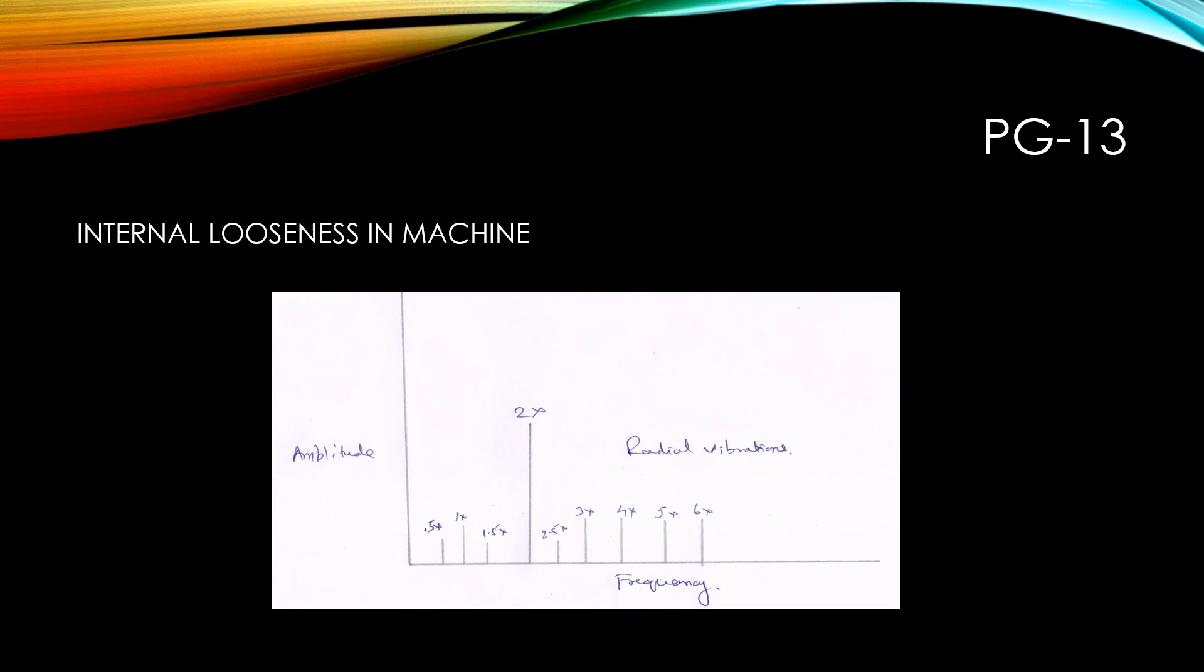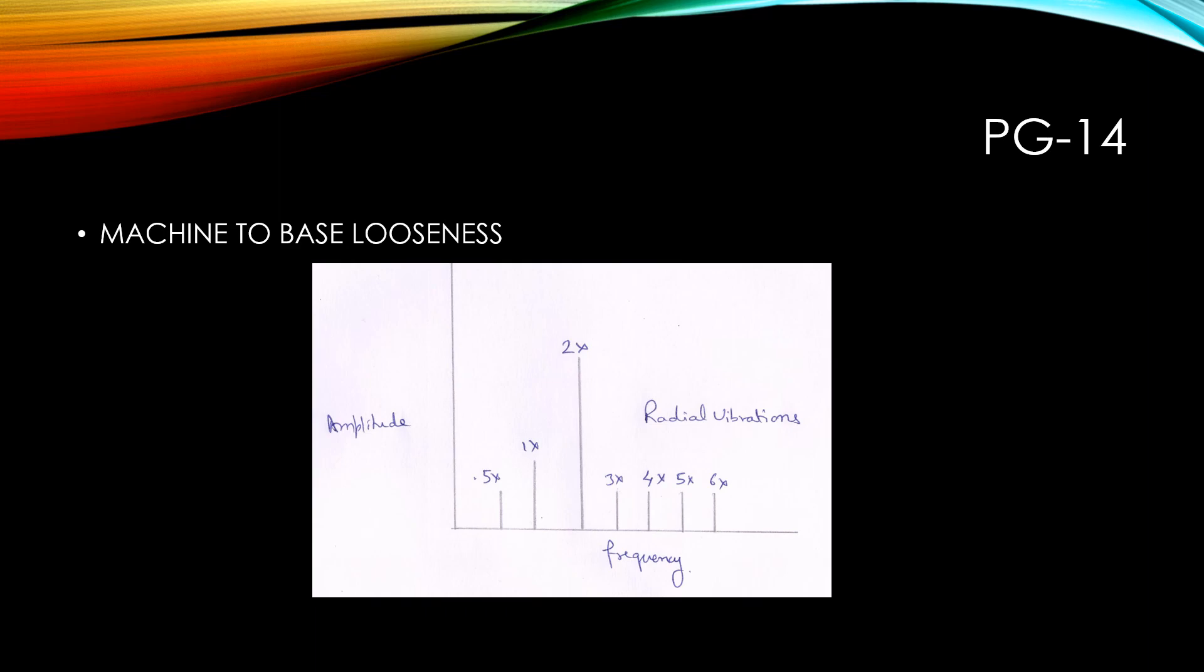So this is the internal looseness in the machine. Then, the looseness between the machine to base plate. The problem is associated with loose pillow block bolts, cracks in the frame, structure, or the bearing pedestal. This makes it evident how higher harmonics are generated due to the rocking motion of the pillow block with loose bolts.